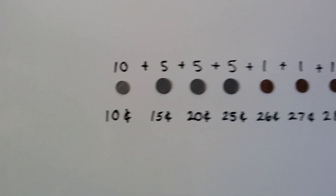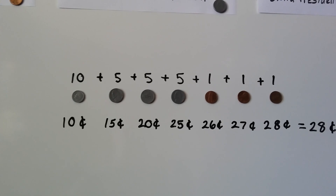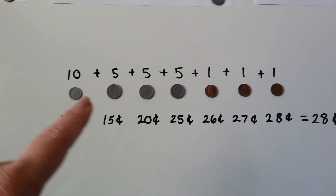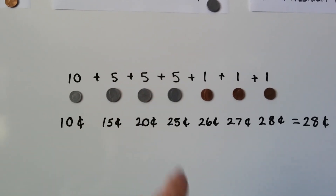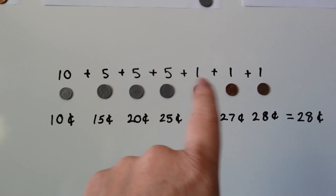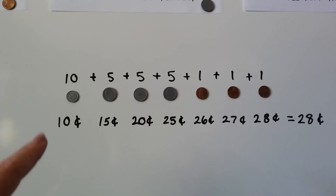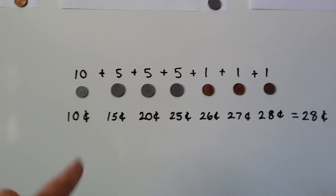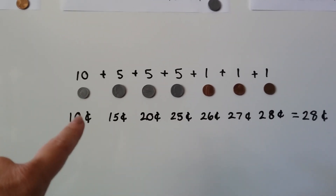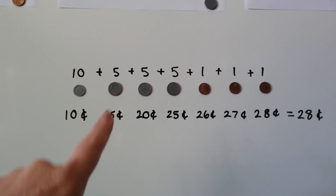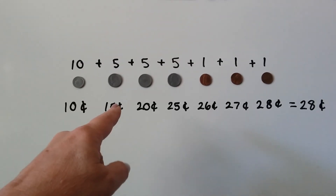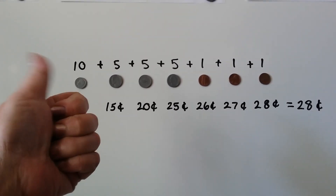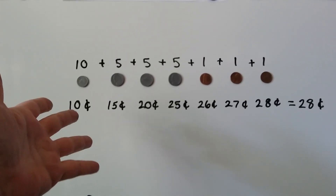Let's try one more. Now we've got seven coins. We've got a dime — that's ten — and one, two, three nickels, and they're each five. And we have three pennies that are each one. We can find the total by counting on. We start with the ten: ten, and five more — ten, eleven, twelve, thirteen, fourteen, fifteen — and five more — fifteen, sixteen, seventeen, eighteen, nineteen, twenty.